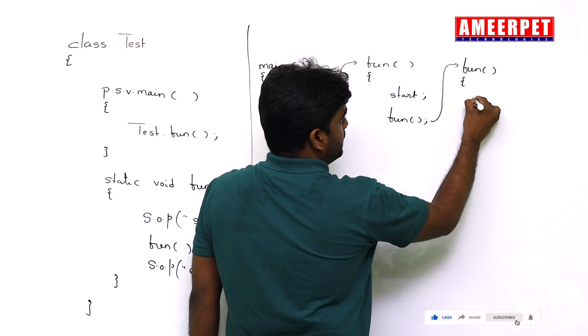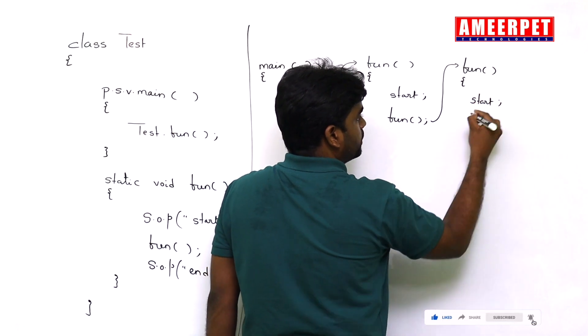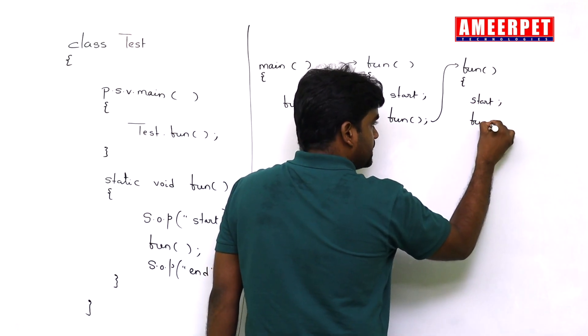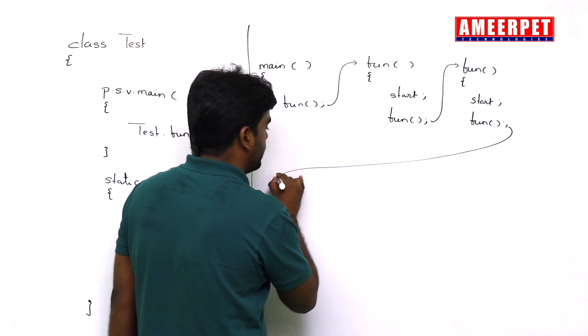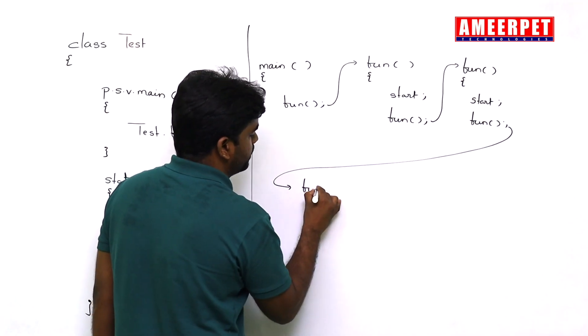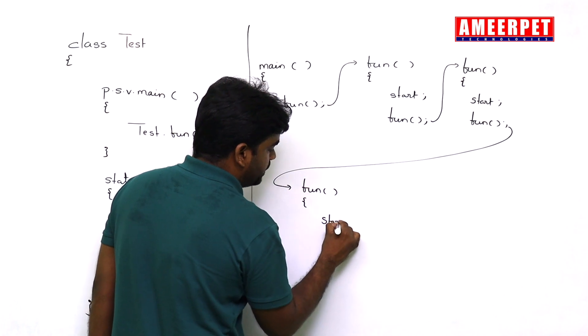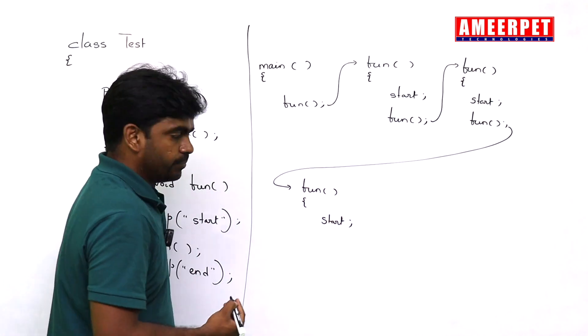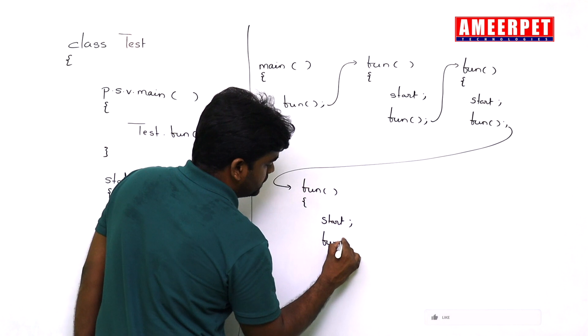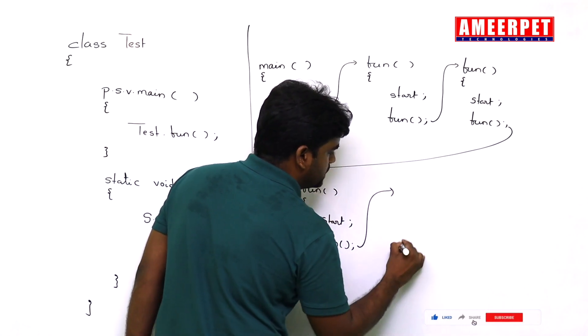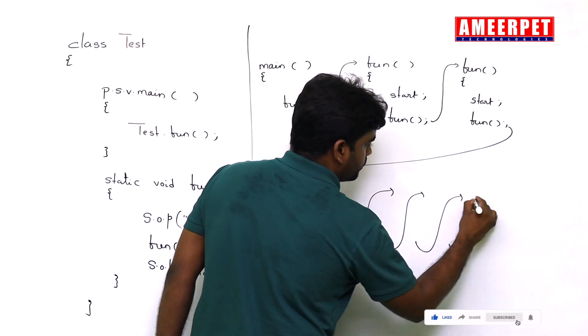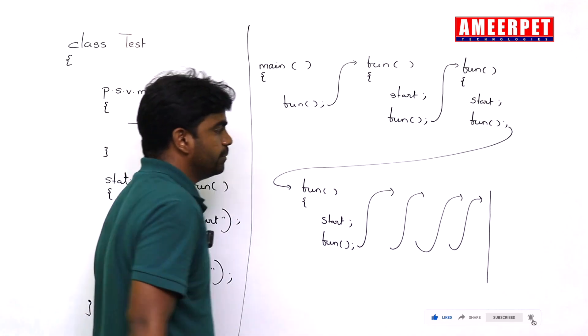In this one, again the first statement execute. Again the second statement fun. So again memory will be allocated to this fun method. Again here start will execute. So again we are calling this fun method. It is keep on executing like this.